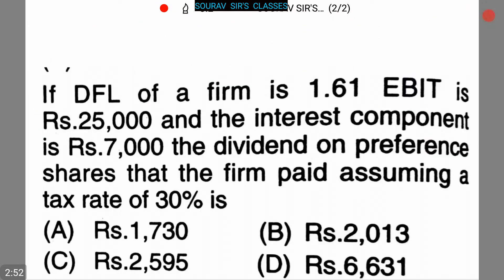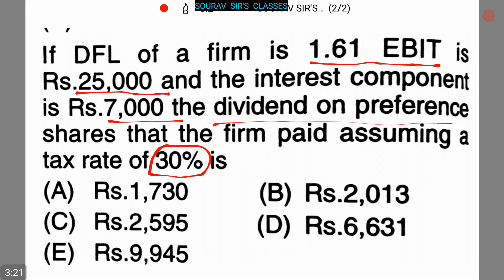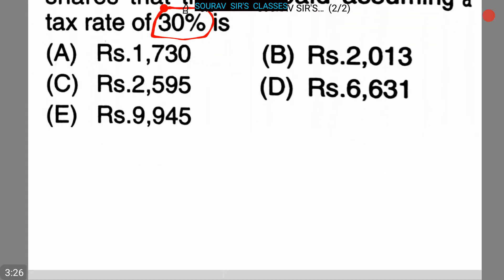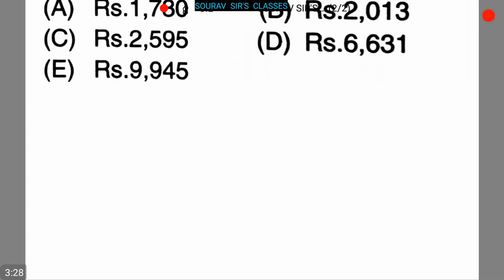Now our next question: The DFL of a firm is 1.61, EBIT is rupees 25,000, and the interest component is rupees 7,000. The dividend on the preference shares that the firm paid assuming a tax rate of 30% is. We have to find the dividend on preference shares.